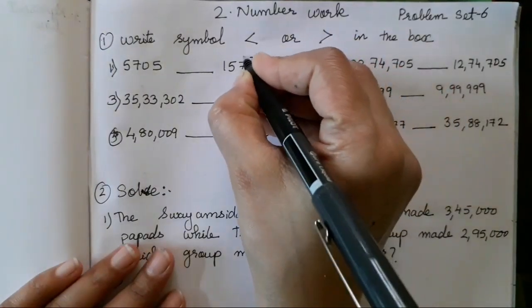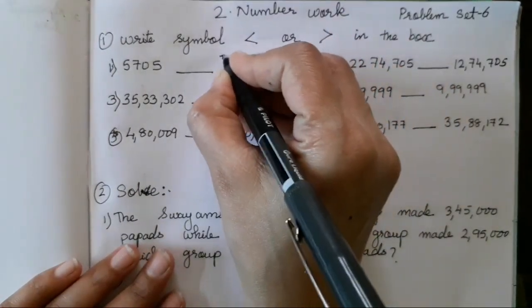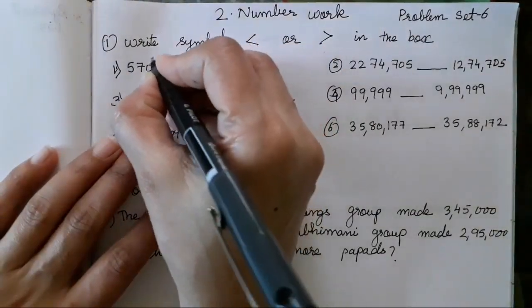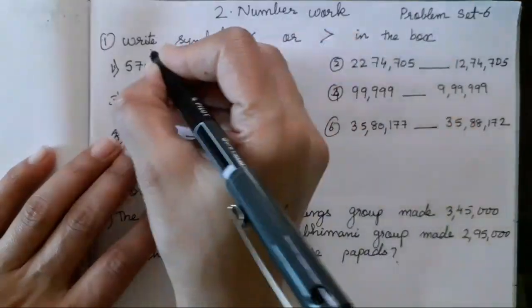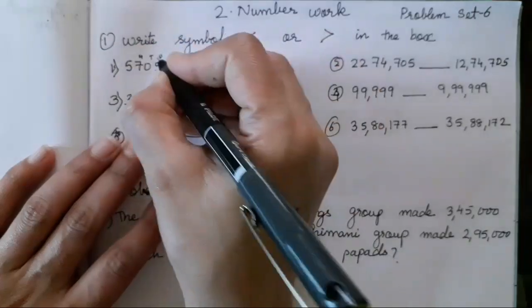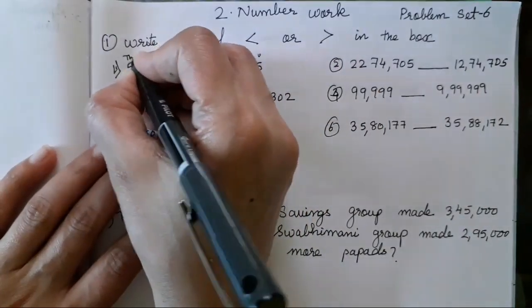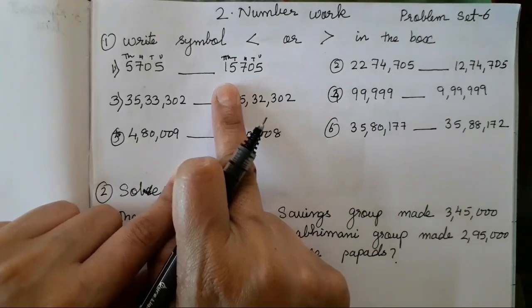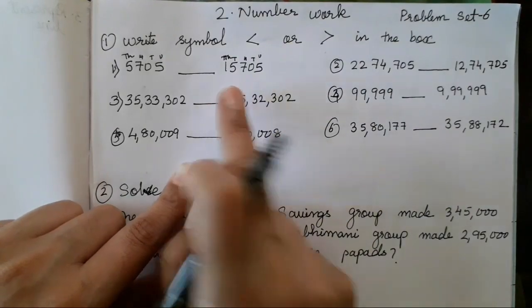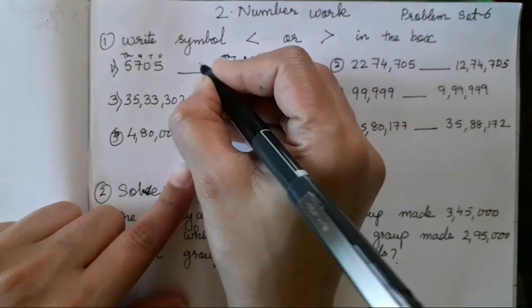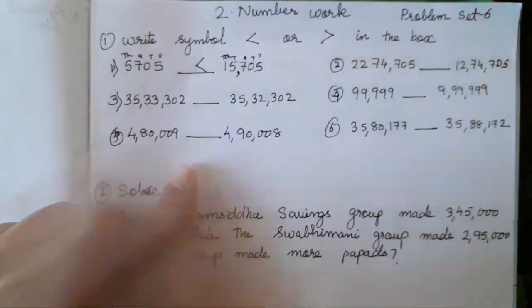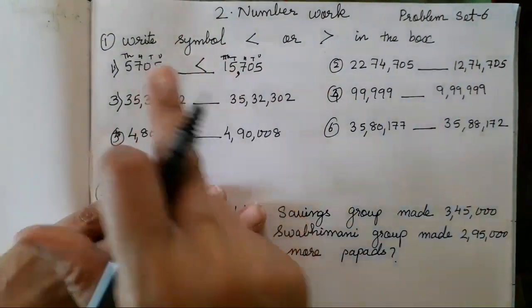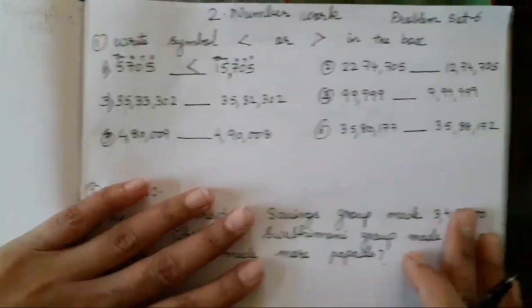Unit, tens, hundred, thousand, ten thousand. First, you all have to count how many digits are there. So — unit, tens, hundred, thousand. Now, you will see over here we are having ten thousand. So, obviously, which number is going to be greater? This number is going to be greater. So, in this way, this is the first step you all have to find it.